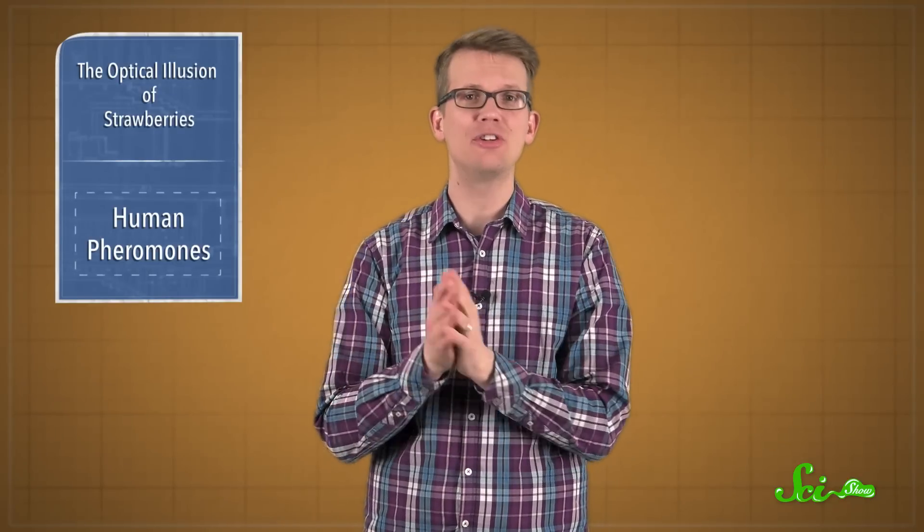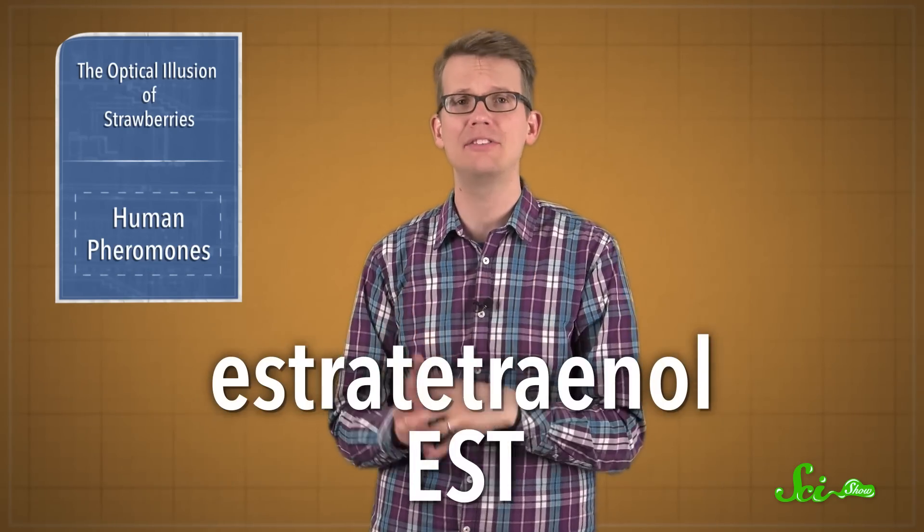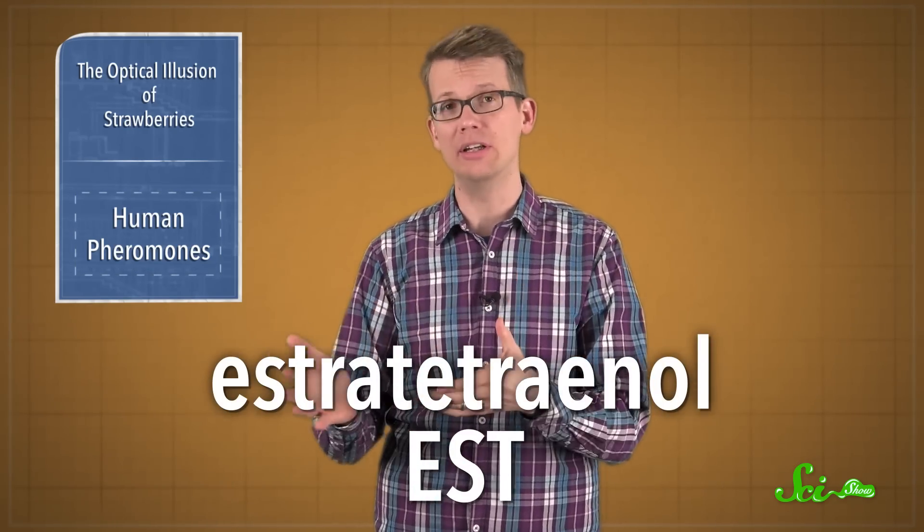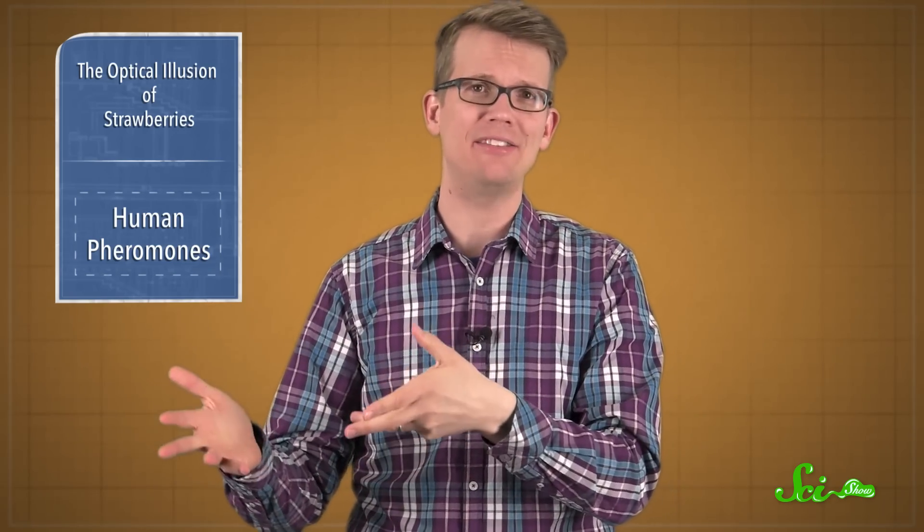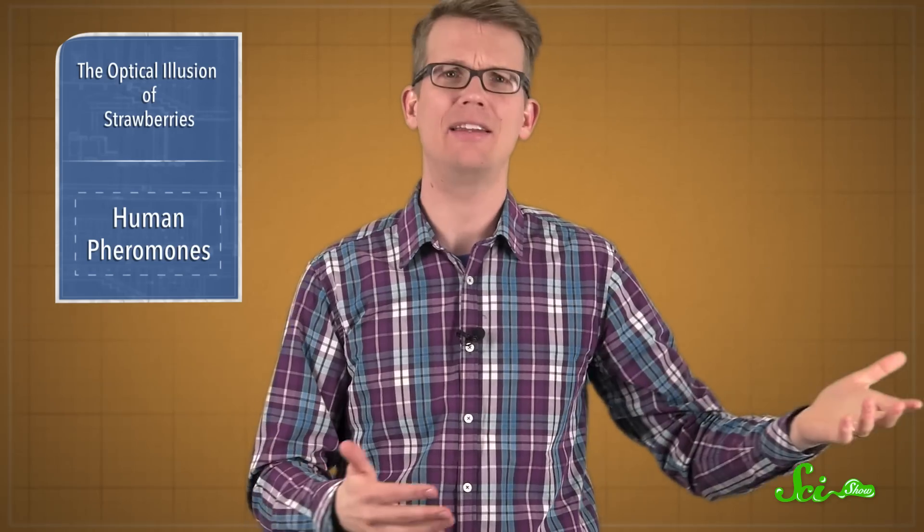Pregnant women in their third trimester turn AND into a different chemical called estratetraenol, or EST, which can be found in their urine. Since only pregnant women make EST, the idea that it, and AND for that matter, could be a sex pheromone is controversial.